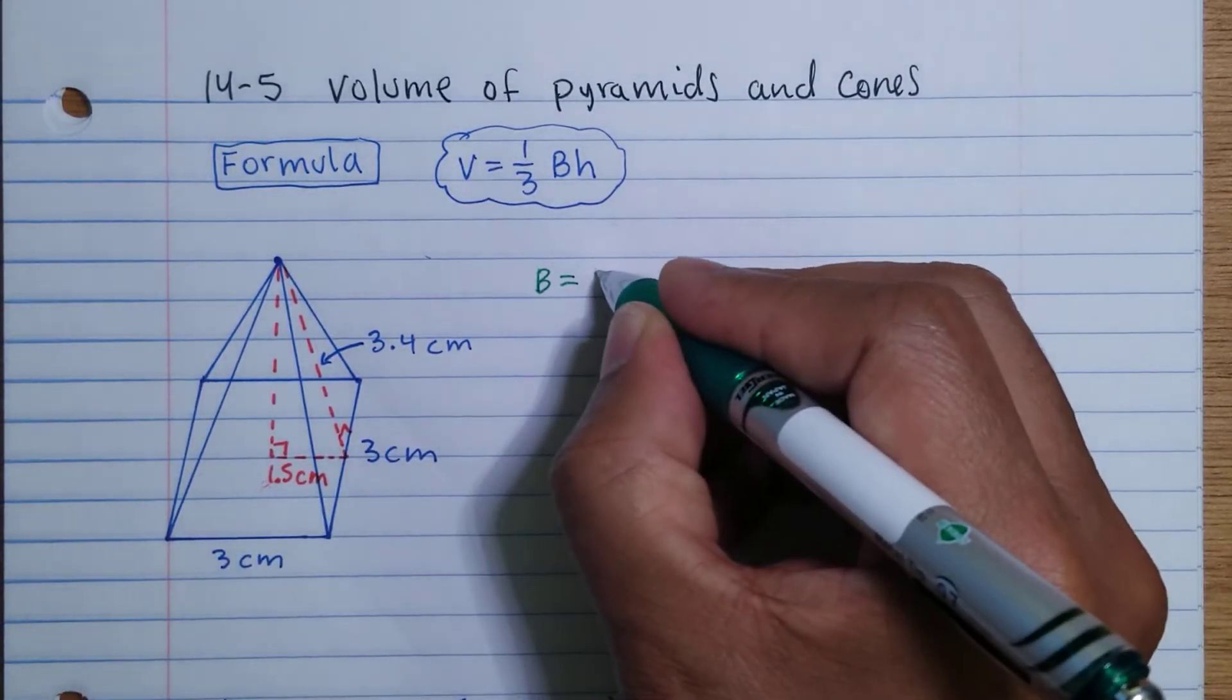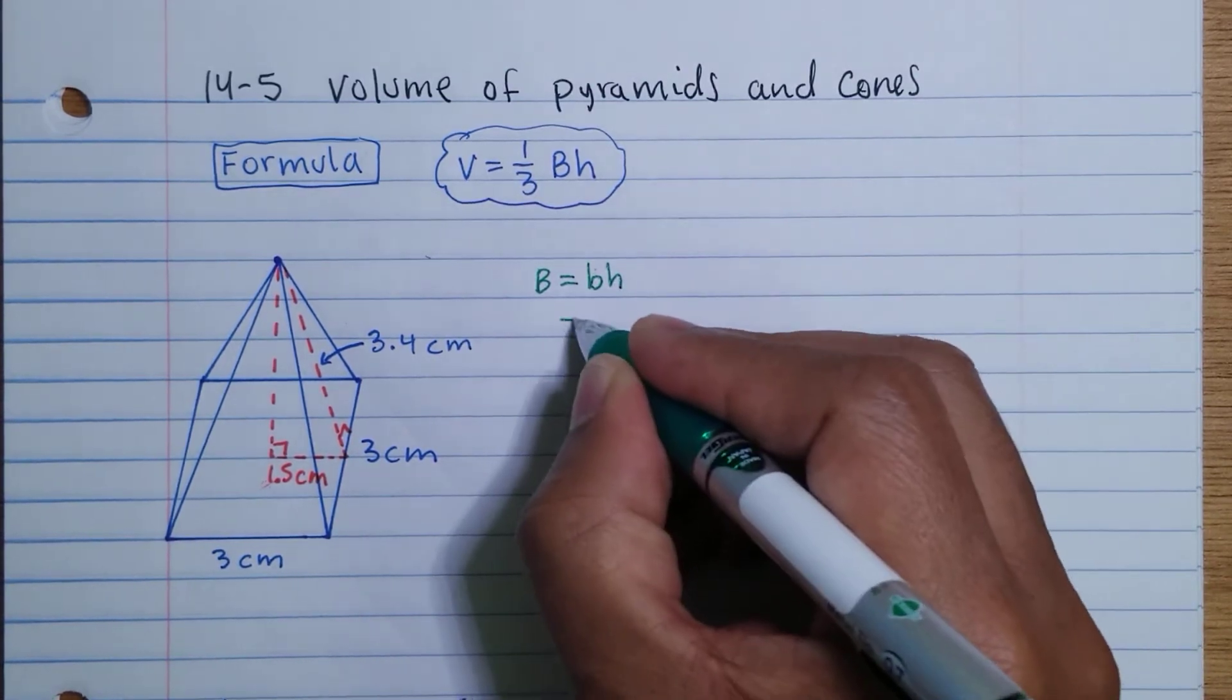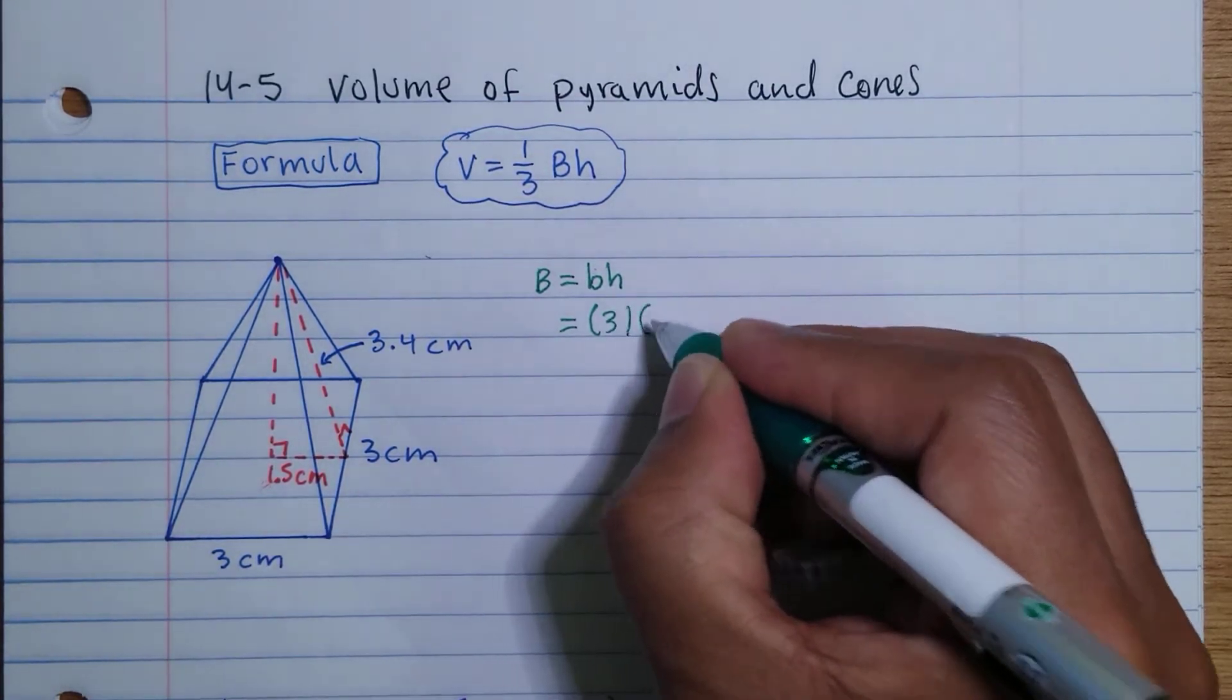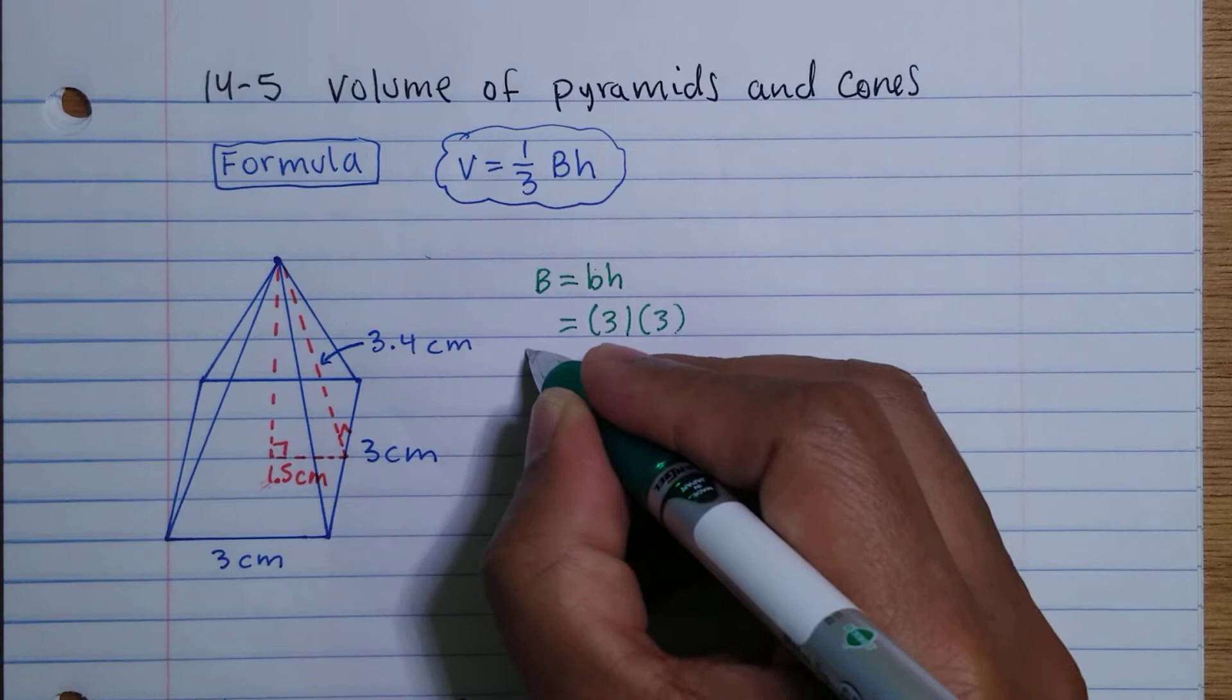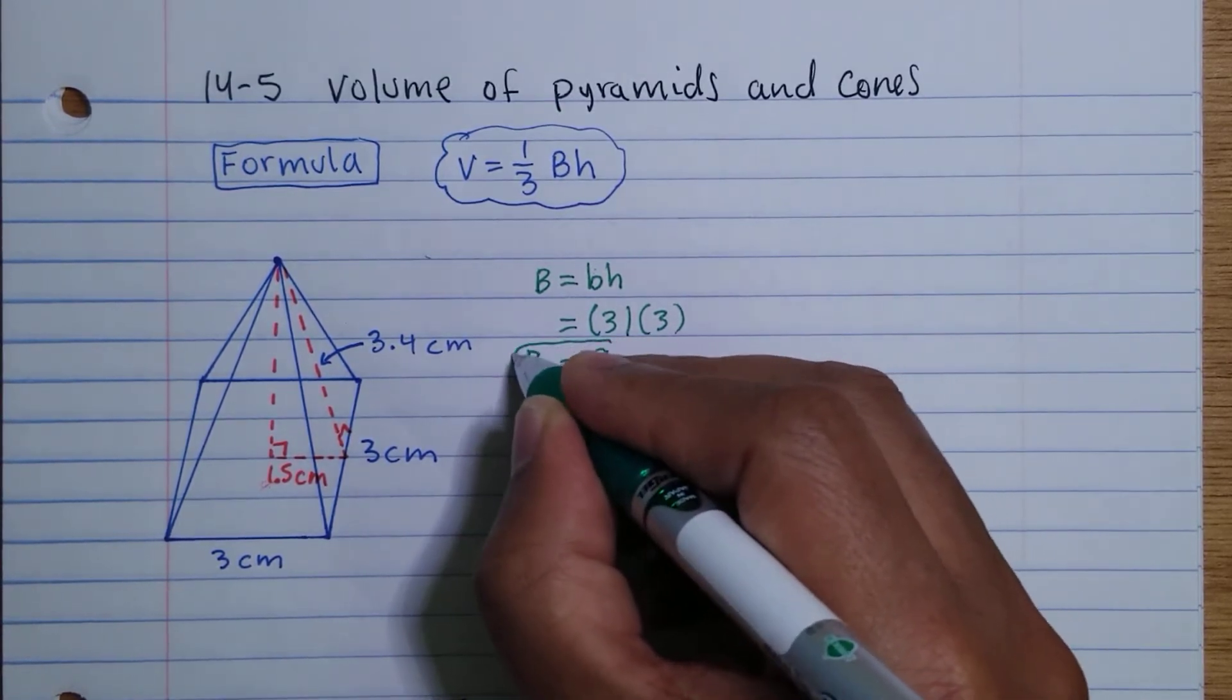So this is 3 times 3. The base is going to be equal to 9. So we have the base for now.